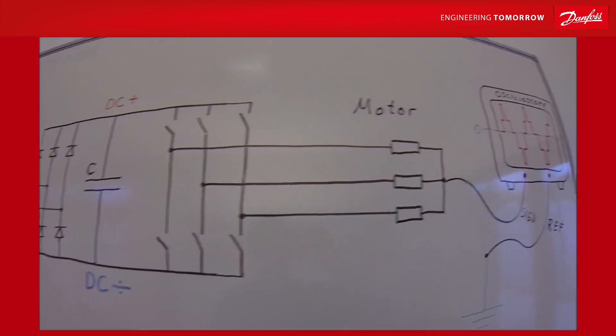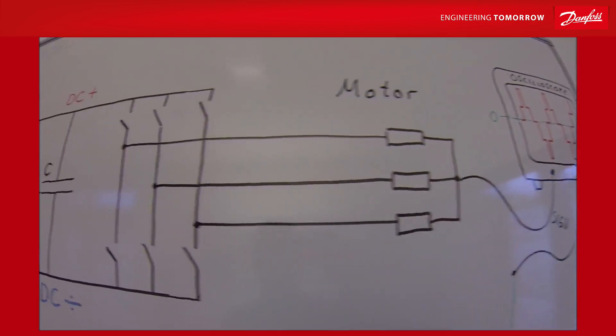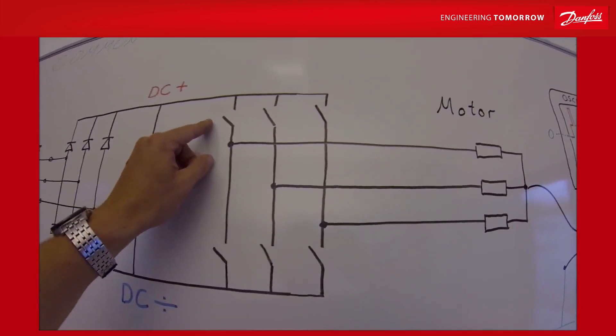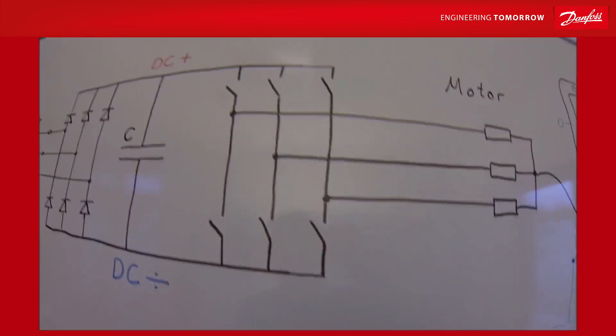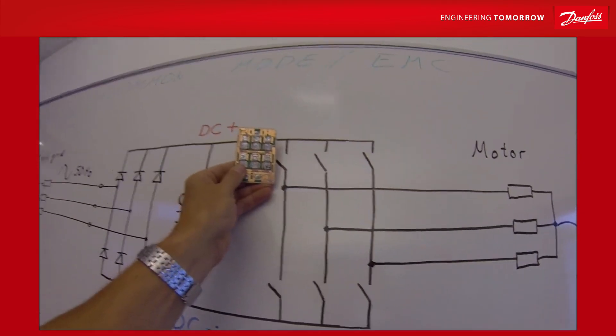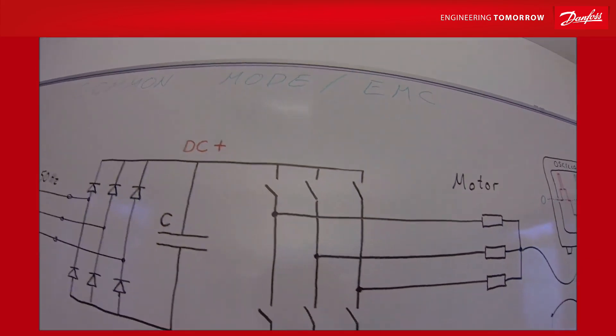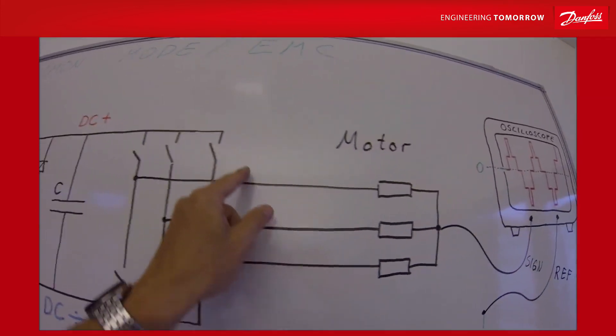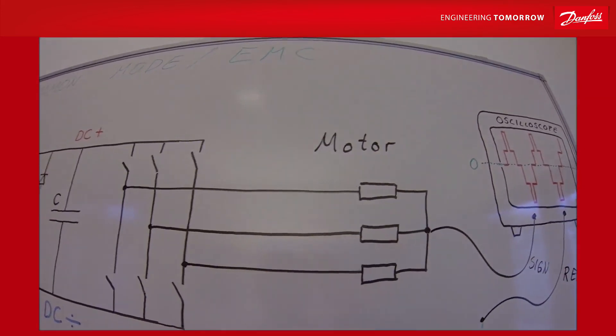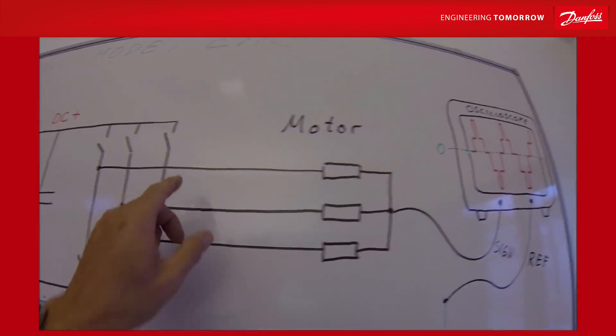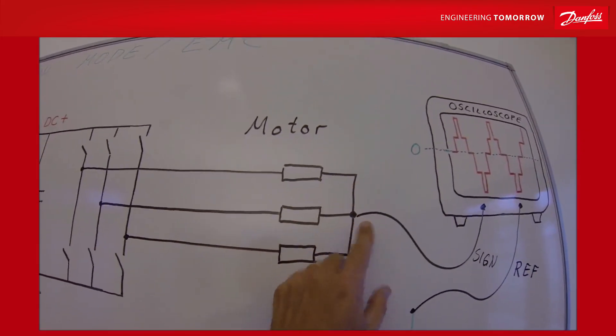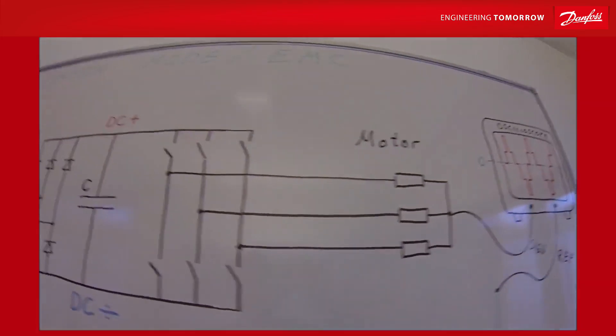Then to produce the AC we have transistors here, IGBTs, big industrial transistors which produce a new AC where we can select the frequency. The frequency we push it through the motor will control the RPM of the motor.